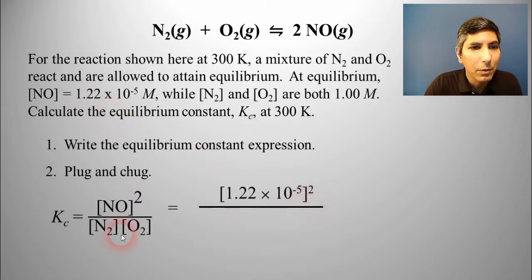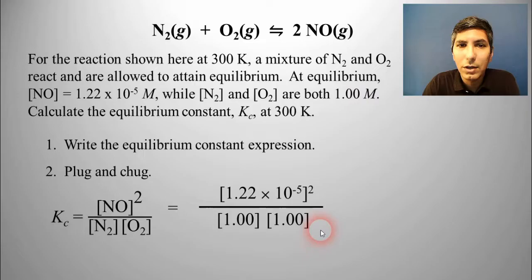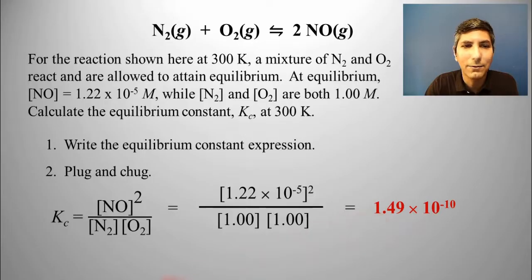In the denominator, we have N2 and O2, and those are both given to us as 1.00 molar. So I will plug both of those in, and now we just key this into our calculator. And we should get an answer that Kc equals 1.49 times 10 to the negative tenth. So that's the answer.